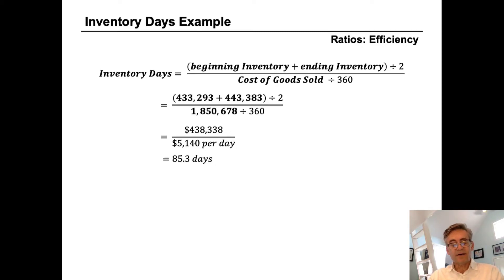And in the denominator, we take the cost of goods sold in 2018 of $1.85 billion and divide that by 360 days to get to $5.14 million per day.